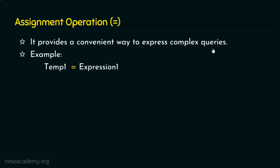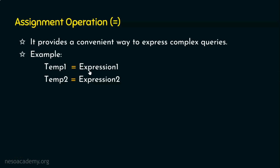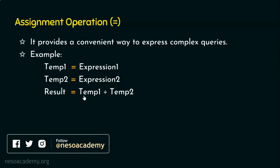For example, we can write a complex relational algebra expression and store its output in a temporary variable temp1, and another expression in temp2. If expression1 and expression2 are complex multi-line relational algebra expressions, they can simply be referred to as temp1 and temp2. Then the final result can be written concisely — for example, temp1 ÷ temp2 — instead of repeating the full complex expressions.